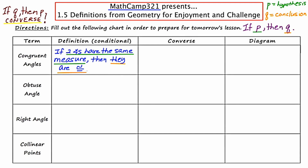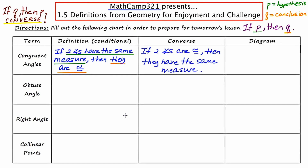I'm going to write the converse by interchanging the orange and the green parts. You might have to change a few words to make it make sense, so I'll say: if two angles are congruent, then they have the same measure. In the original conditional, the hypothesis talked about the same measure — now that comes at the end. The conclusion talked about angles being congruent — now that comes at the beginning. We've effectively interchanged the hypothesis and the conclusion.